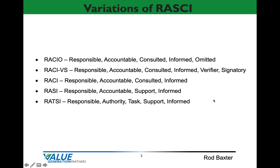There are several variations of responsibility matrix. Each of these variations has a role of responsible as well as a role of informed. Many of them also have the role of accountable or authority, and then consulted, support, and the role of task, or omitted, verifier, and signatory. There are a variety of roles associated with each of these responsibility matrices, and you should choose the one that best fits your industry and your business.